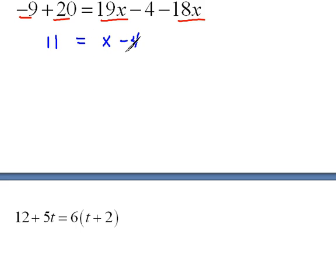Now we're just one step away from being done. We need to get x alone, so we have to do the opposite of a subtract 4, which would be to add 4 to both sides. So now we have 15 equals x.